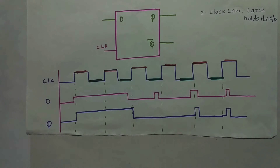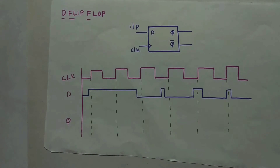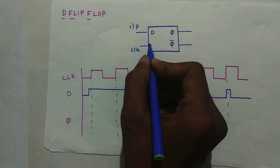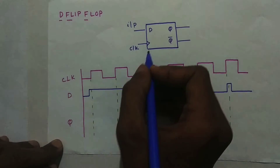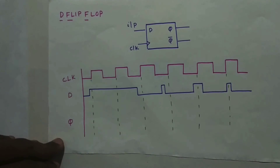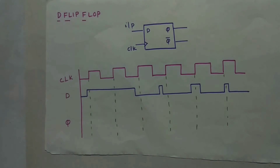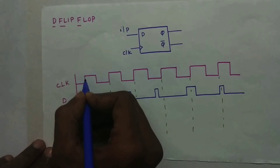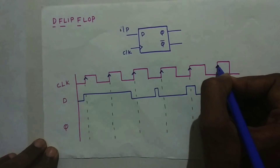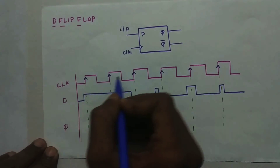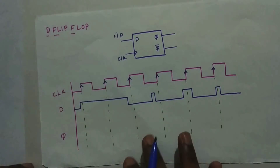Now let's go to the D flip-flop. It looks similar — yes, a flip-flop is almost similar to a latch but with one key difference: a flip-flop is made up of two latches, which we will discuss in another video. A flip-flop is dependent upon the edge — the positive edge or negative edge. Here we have considered a positive edge example. The arrows indicate the positive edges, and transitions in the other direction are negative edges.